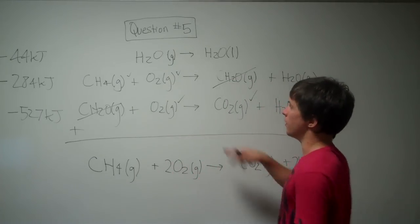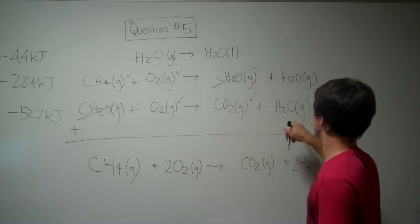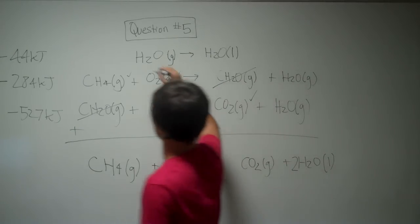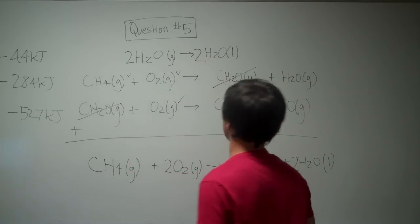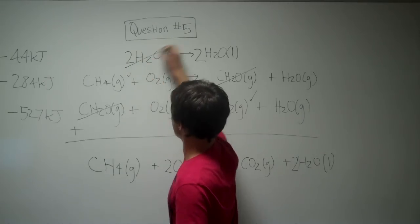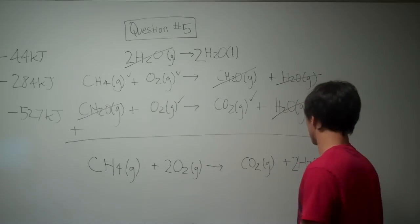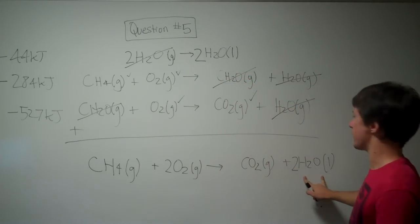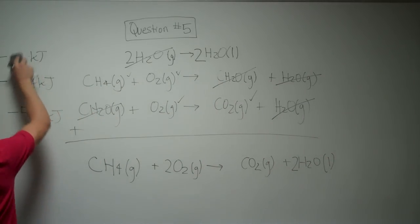Now, currently, if we left this the way it is, this gas is going to cancel out this gas, but not this gas. So, if we double the whole reaction, two and two... Remember, you have to double both sides. Now, both of these gases are going to cancel out with this water gas. So, water gas cancels, two water gases over here, which is perfect, because we needed two liquid waters on this side to add up to this. But remember, since we doubled the reaction, we have to double this over here.